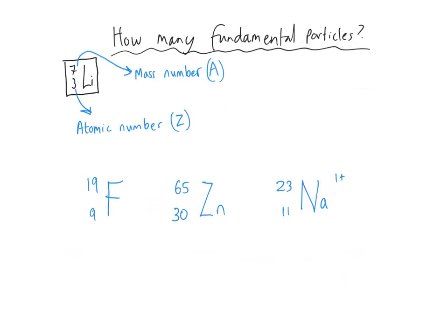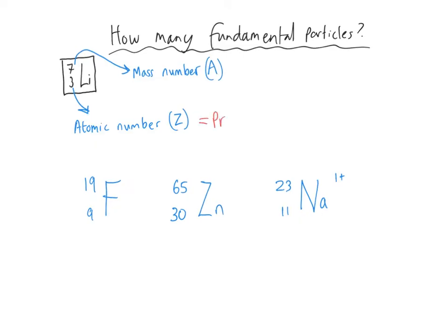Let's have a look at how many fundamental particles there are in atoms or ions. We need to recap how we can use the periodic table to help us. All elements have their own symbol and two different numbers: the atomic number, given the symbol Z, and the mass number, given the symbol A. The atomic number is the number of protons in an atom, and the mass number is the number of nucleons — the number of protons plus the number of neutrons.